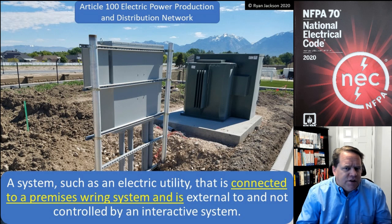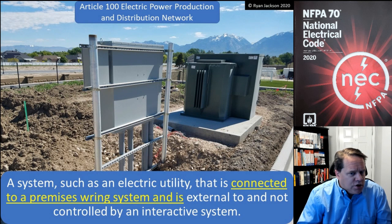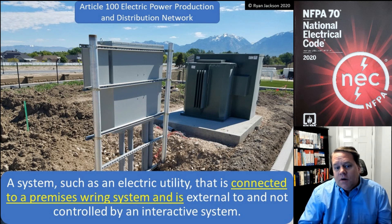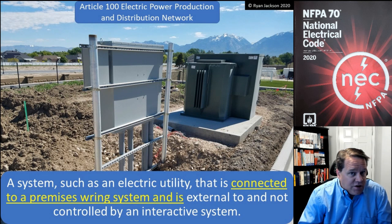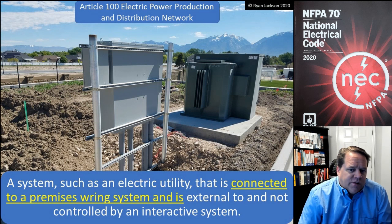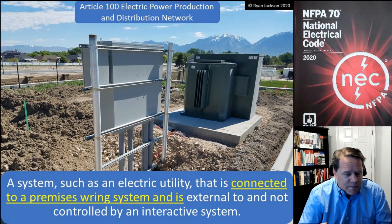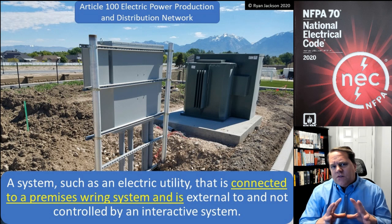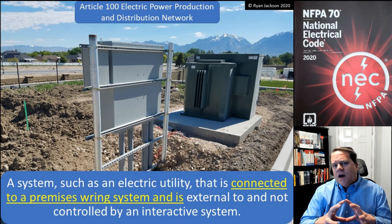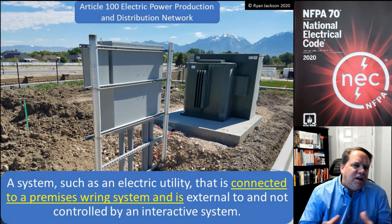A nice easy one for today. Although this is a fairly new term: electric power production and distribution network. This is a system such as an electric utility that's connected to a premises wiring system and is external to and not controlled by an interactive system.